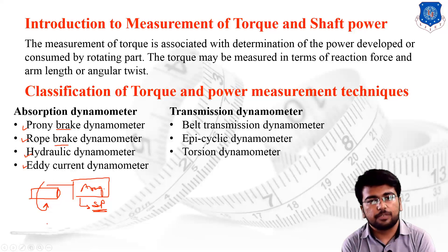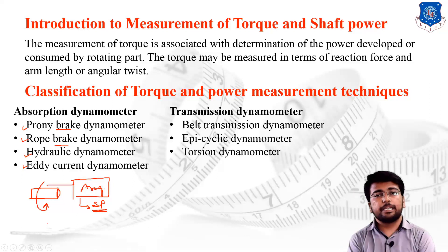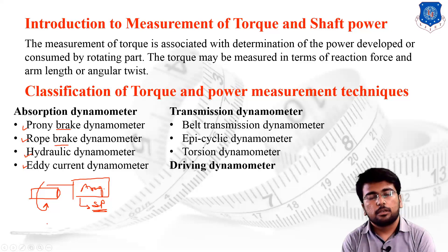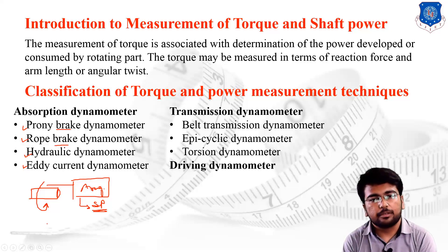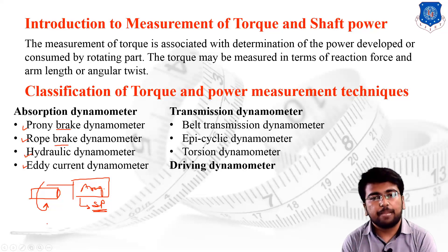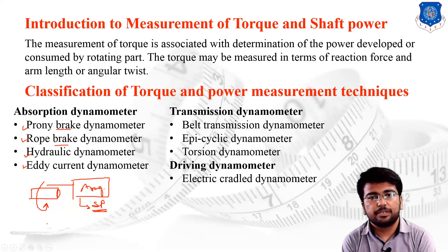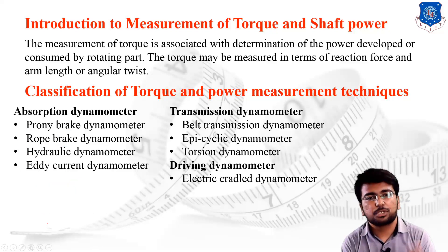The third category is the torsion type dynamometer, in which motion is transferred as an angle of twist from one shaft to another, and the angle of twist is measured to determine shaft power. The fourth and last category is the driving type dynamometer, whose primary application is the electric cradle dynamometer — an instrument based on electric circuitry and sensors for measuring shaft power.